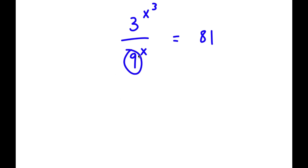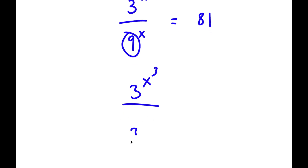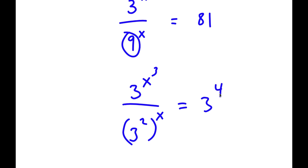The first thing I'm going to do is rewrite 9 as 3 to the power of 2. So now I have 3 to the power of x to the power of 3 over 3 to the power of 2 to the power of x, and I'm going to rewrite 81 as 3 to the power of 4.